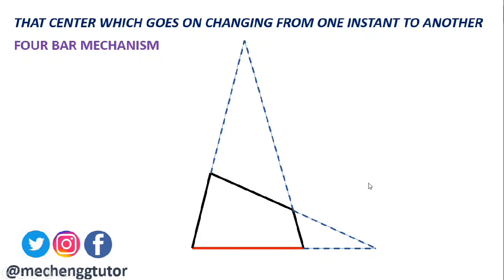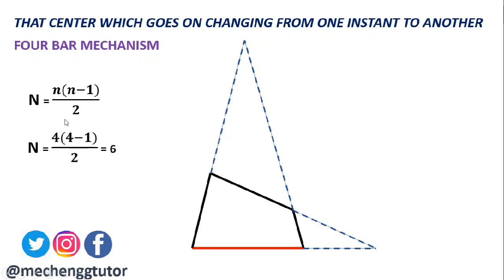For a four-bar mechanism, the total number of instantaneous centers is calculated using the equation: N = n(n−1)/2, where n is the number of links in the mechanism. For the four-bar mechanism, n = 4, so substituting gives N = 6. This means a four-bar mechanism has six instantaneous centers.